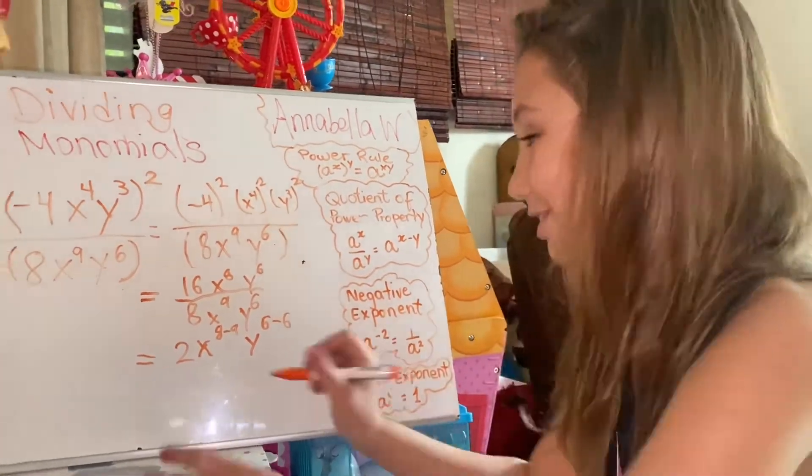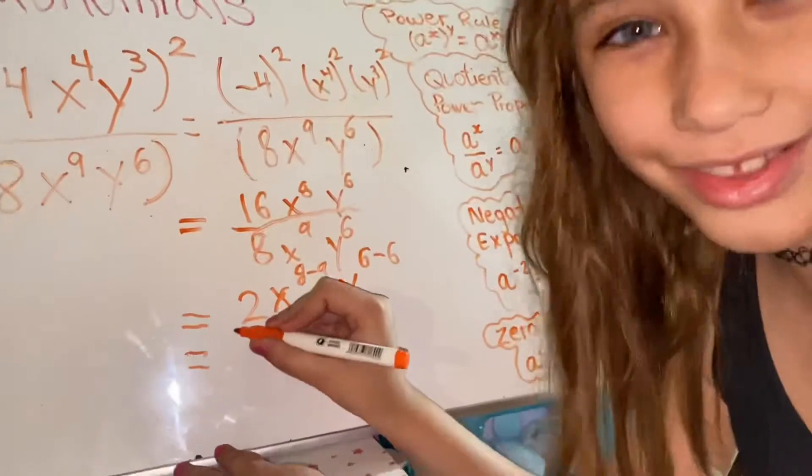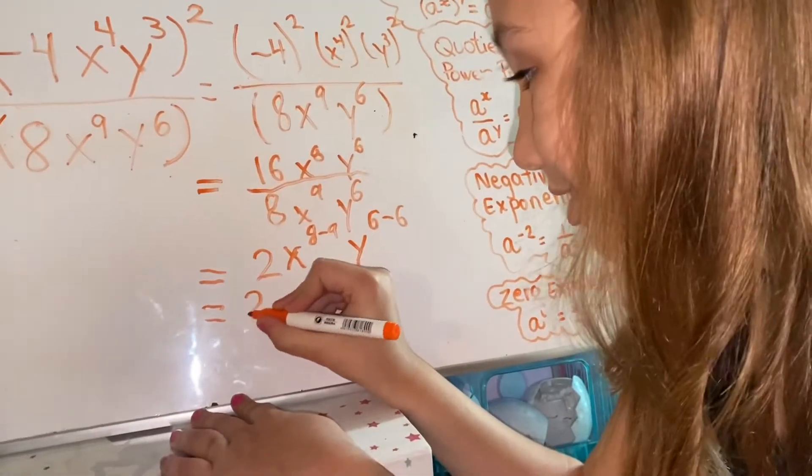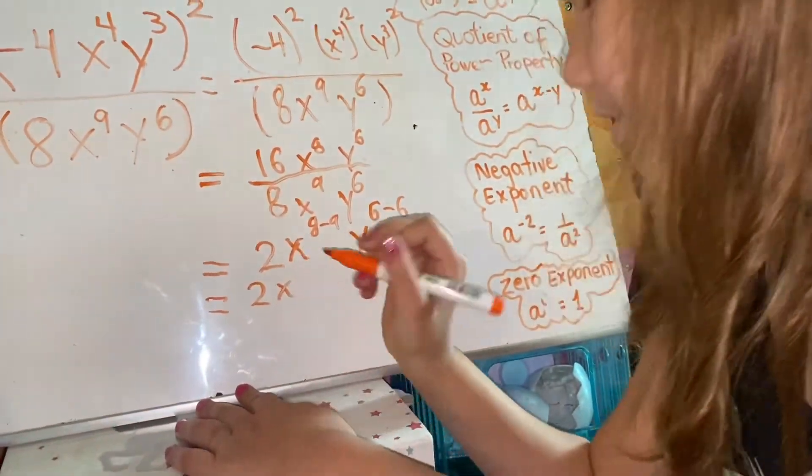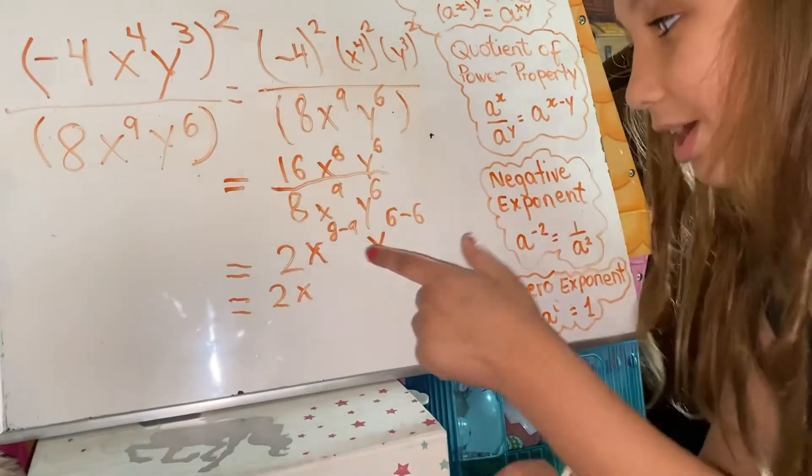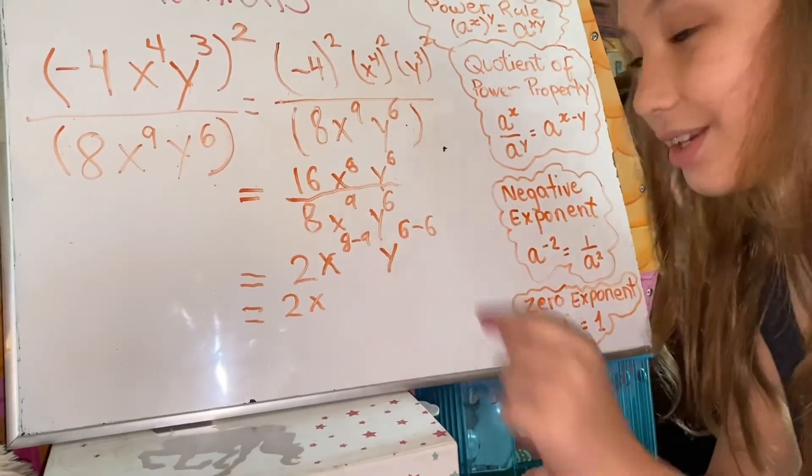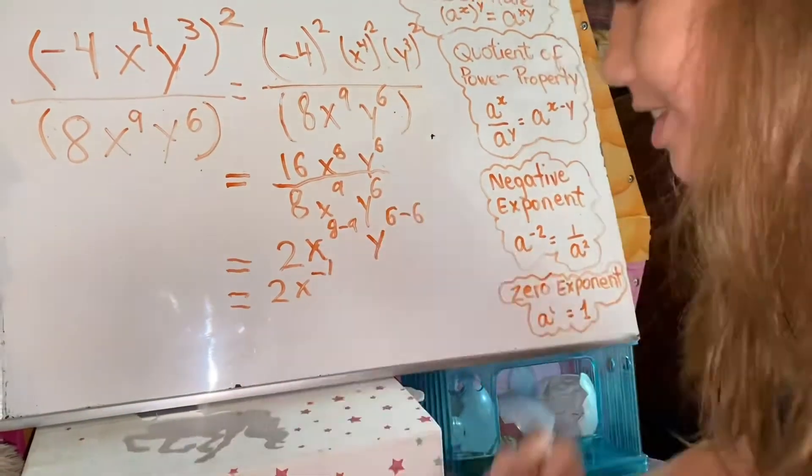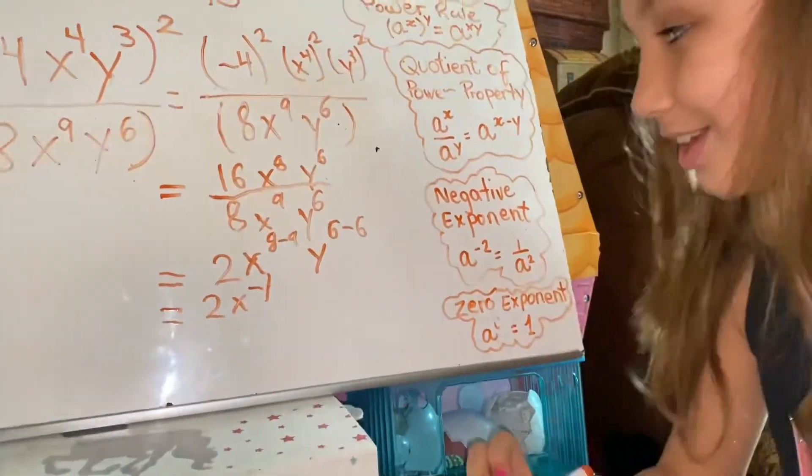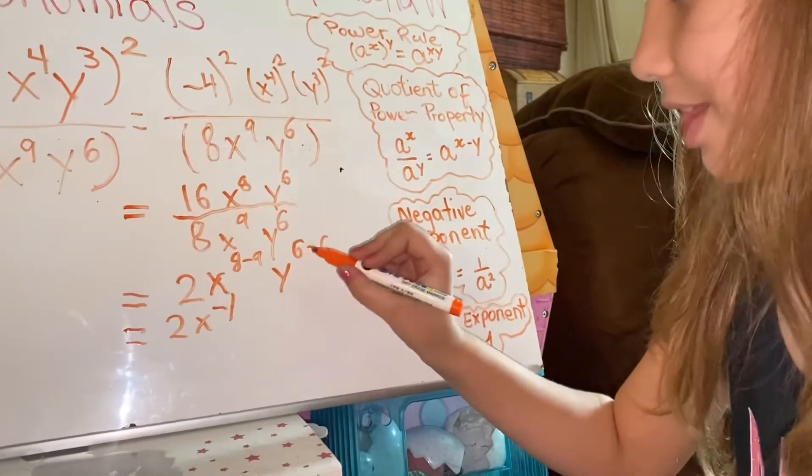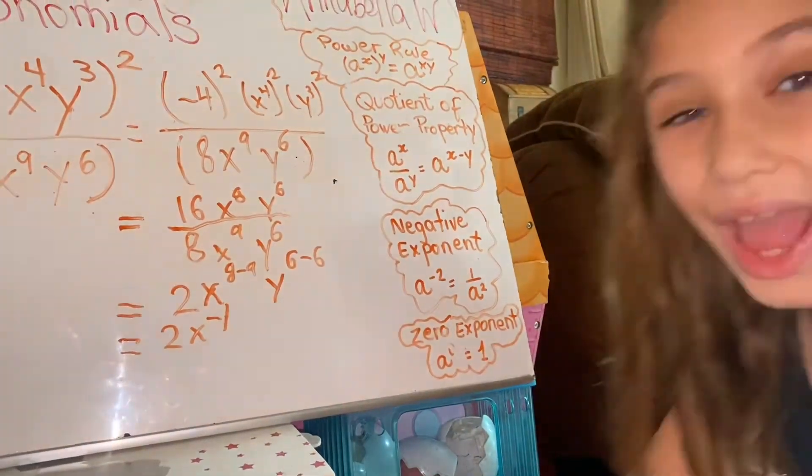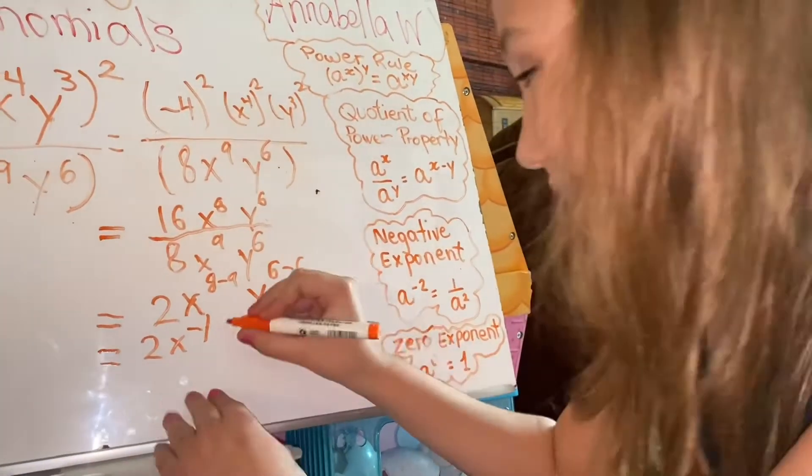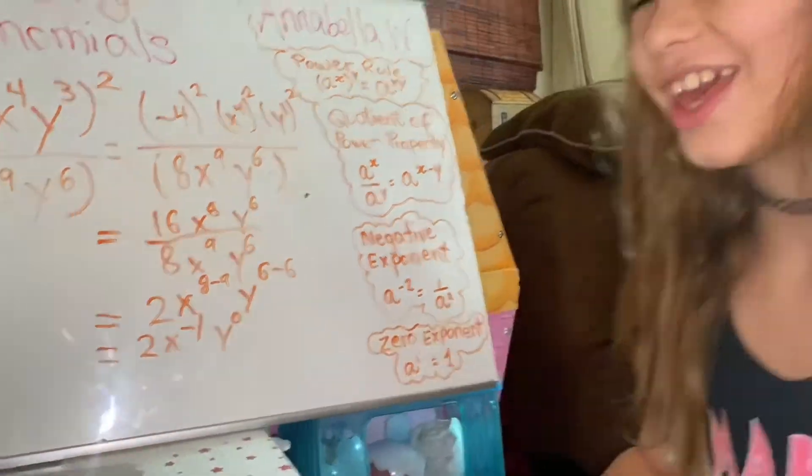Now we solve. 2x raised to the power of 8 minus 9, that would be negative 1. Negative 1. Now y, 6 minus 6 is 0, so y by the power of 0. Easy, right?